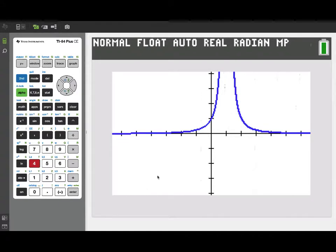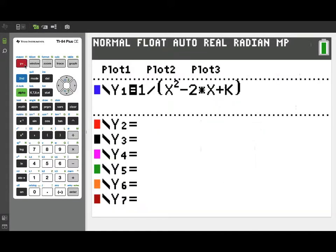There's a vertical asymptote right there at x equal 1. If we go back to our y equals menu and think about the symbolic form, when k is equal to 1, that denominator is actually a perfect square. It's the quantity x minus 1 quantity squared, which would result in that x squared minus 2x plus 1.